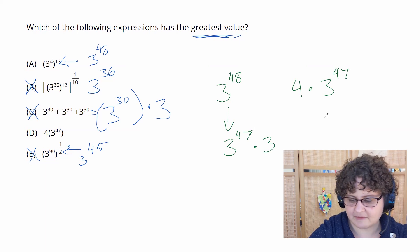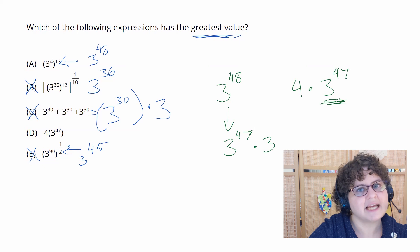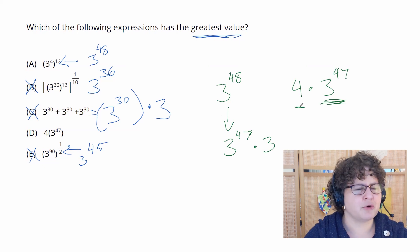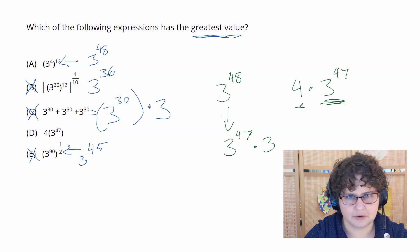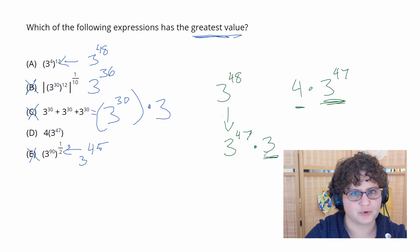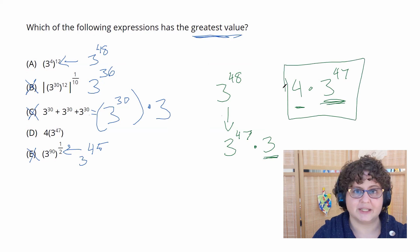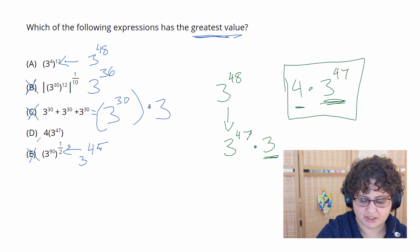This one's got 47 threes, but rather than a 3 tacked onto the end it has a 4. That is going to be very slightly bigger than the one that's multiplied by 3. So our final answer is going to be answer choice D, 4 times 3 to the 47th.